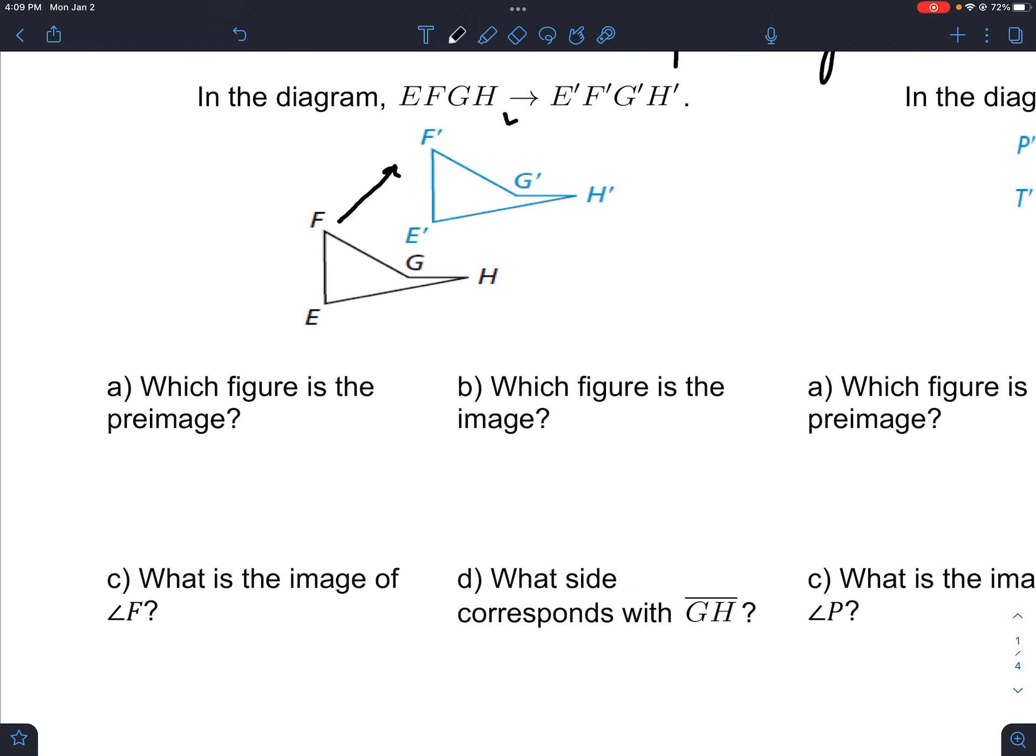This little arrow means that it's been transformed into another shape, or in this case, just moved. So the pre-image is the before, and the image is after.